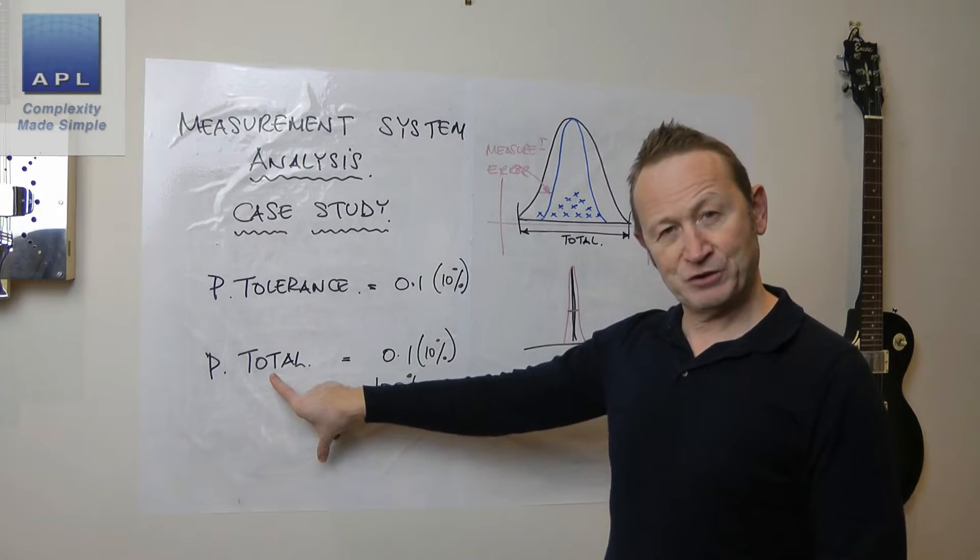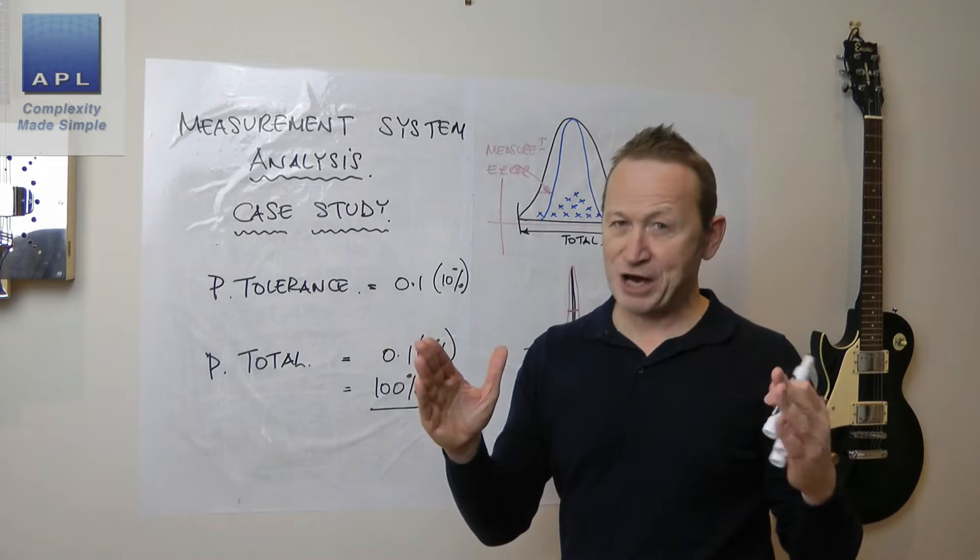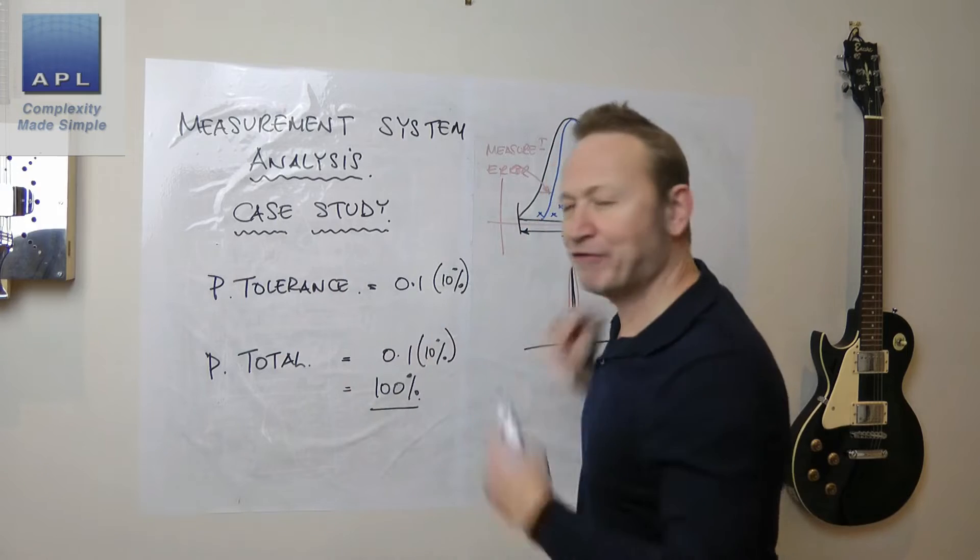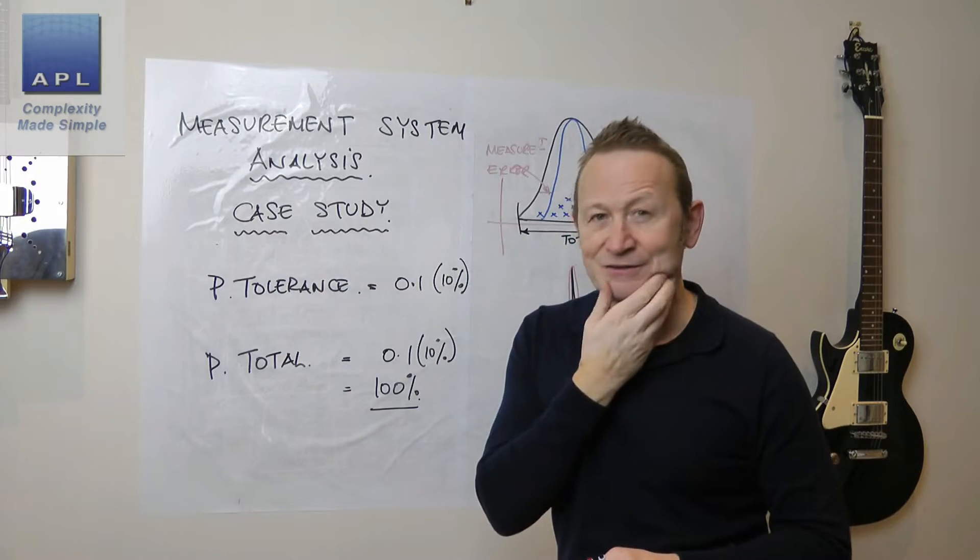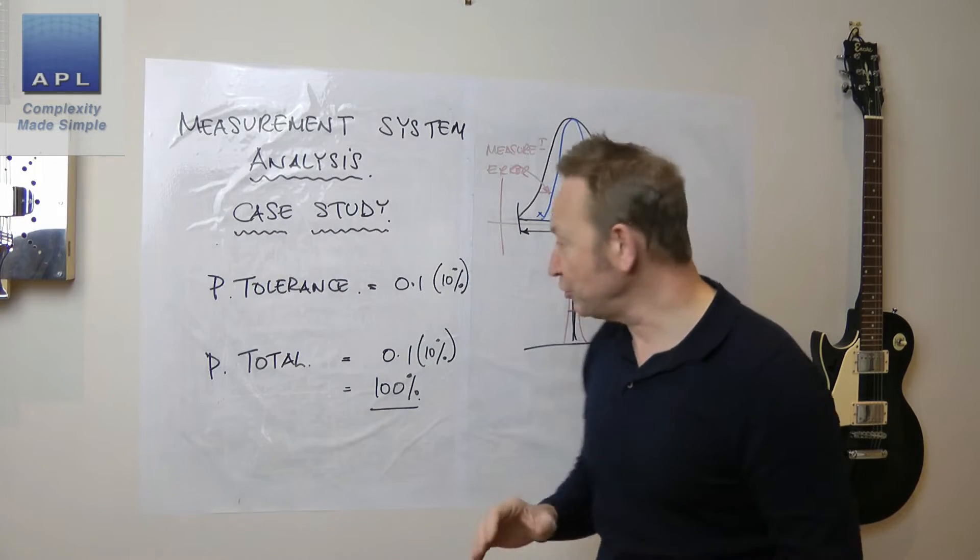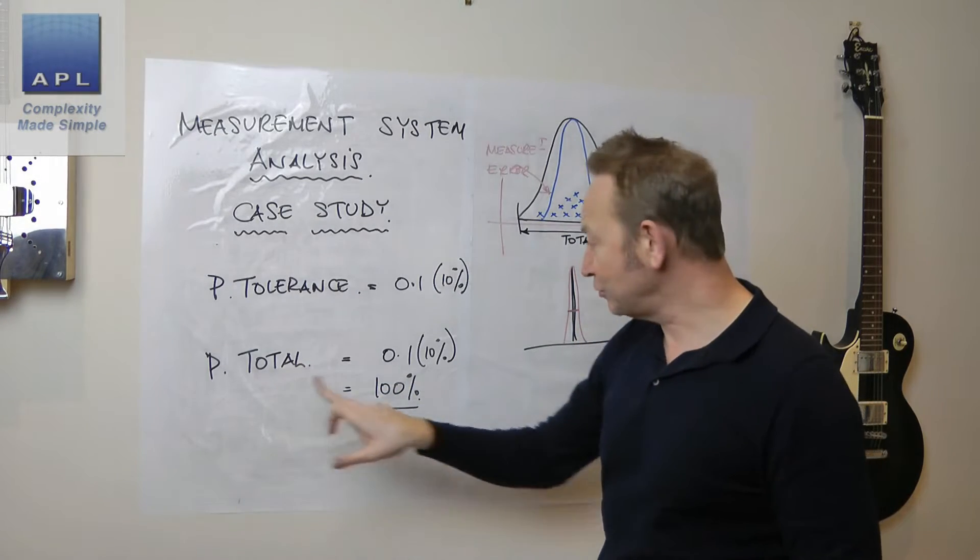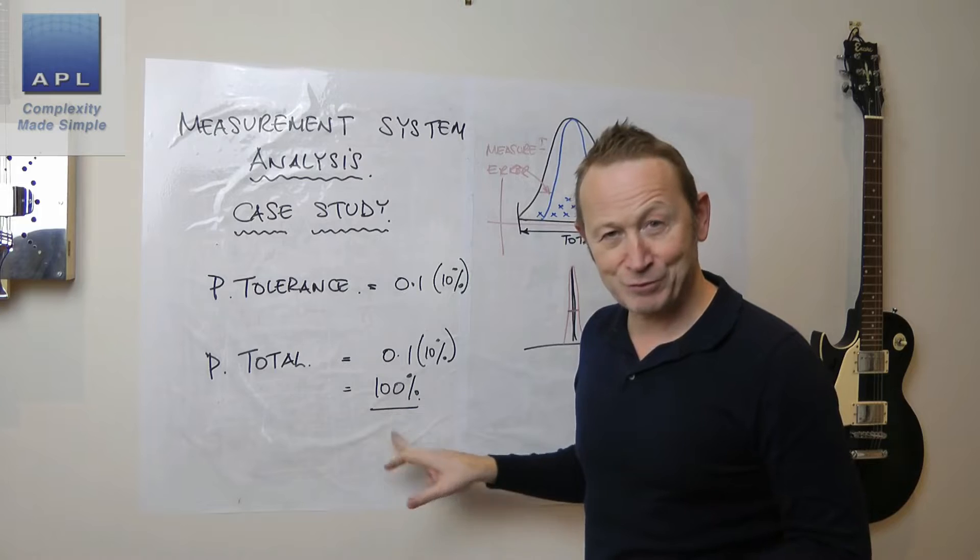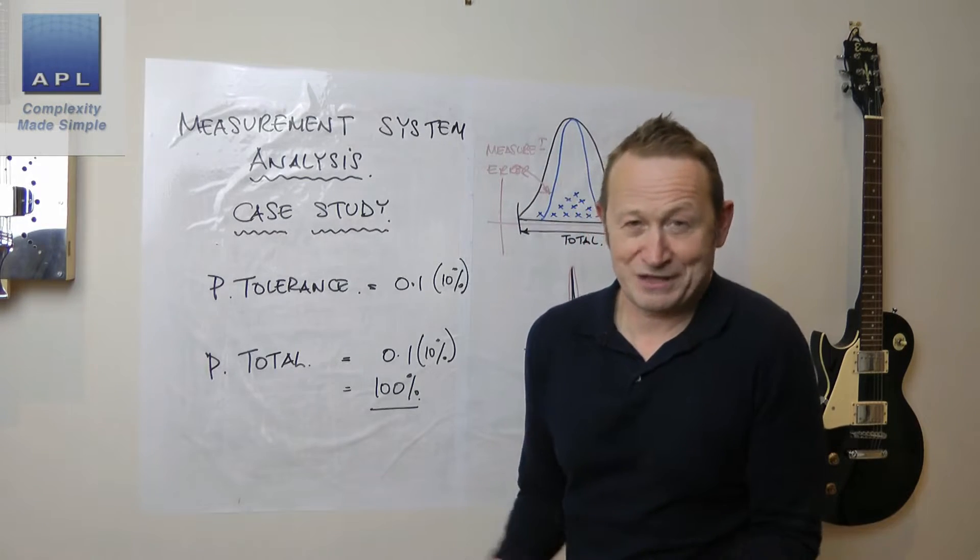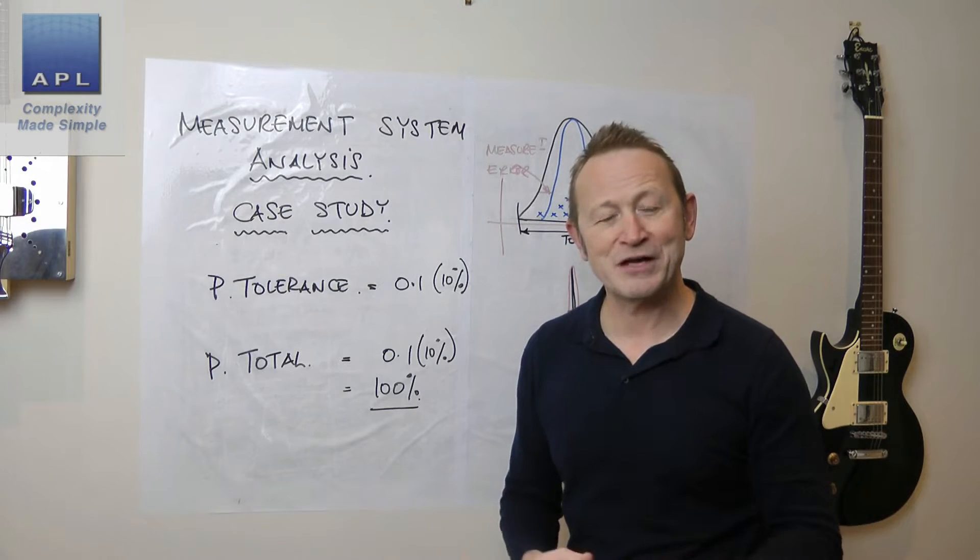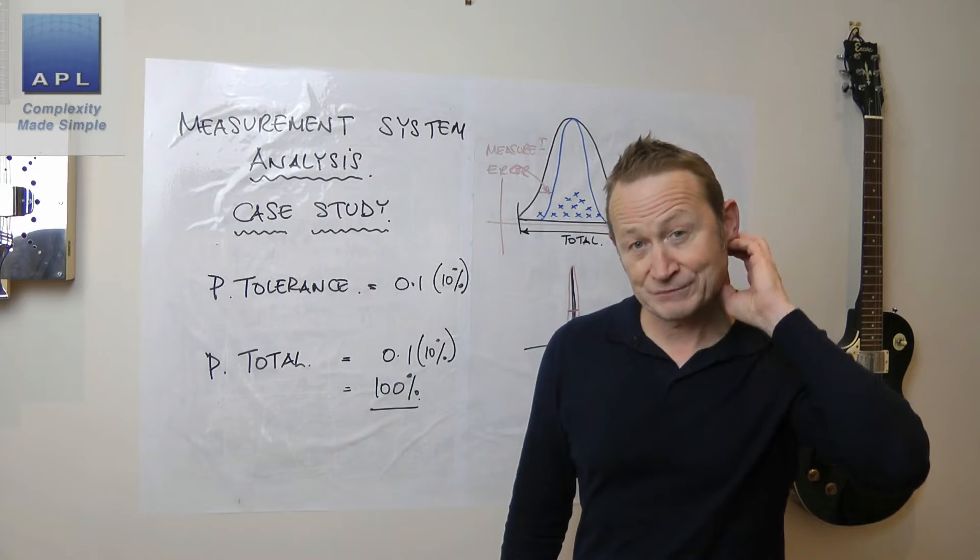Then what the mathematics will see is a natural spread of the process. And then it says, well, how much extra variability am I adding onto the problem? So what he's done, he's shown it no variability in the parts. Therefore this looks terrible. Because of course the maths, the only thing the maths can see is variability that's coming from the measurement system. And then he tells him that 100%.